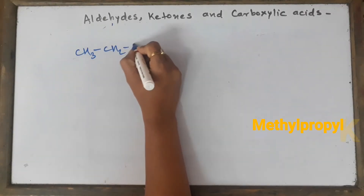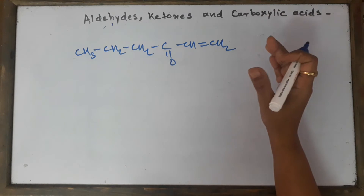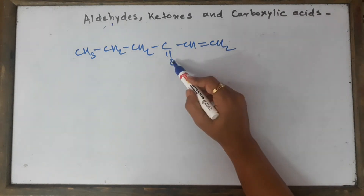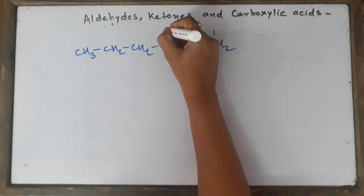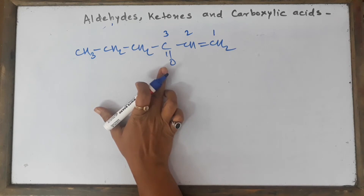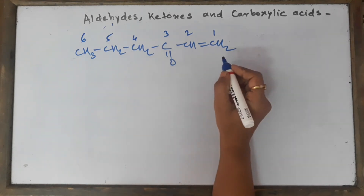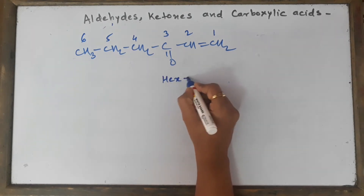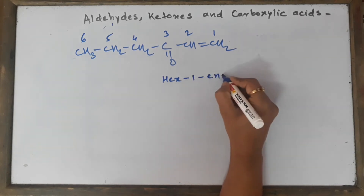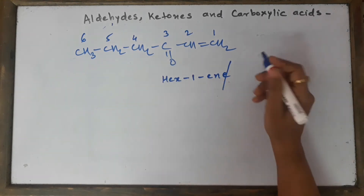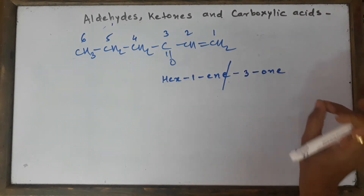Now let me show some more compounds. CH3, CH2, CH2, C double bond O, CH double bond CH2. When we look at such a compound, we can see there is a double bond as well as a ketone, and we have to give more importance to the ketone. So the numbering will start from this side because C double bond O should get the least possible number. It contains six carbons, so HEX is the root word. At position number 1 you have a double bond, so we say hex-1-en. Remove the E and write dash-3-one. The IUPAC name is hex-1-en-3-one.